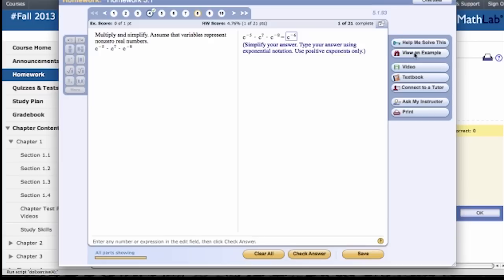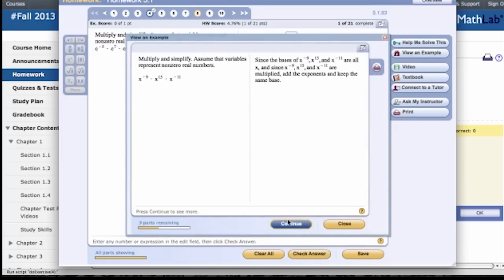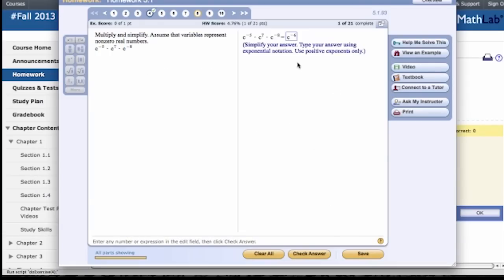So, simplify your answer. Type your answer using exponential notation. Use positive exponents only. I can also go over here, view an example, and I continue, continue, continue. And notice, oh, positive exponents. I'm going to have to drop that in the denominator. So, let's check. So, instead of c to the negative 6th, I'm going to rewrite this as, here's the fraction key.